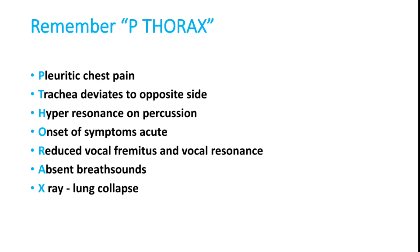The mnemonic P-THORAX helps remember pneumothorax findings: Pleuritic chest pain; Trachea deviates to opposite side; Hyper-resonance on percussion; Onset of symptoms acute or hyperacute; Reduced vocal fremitus and vocal resonance; Absent breath sounds; X-ray shows lung collapse.